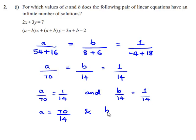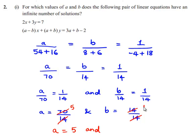So we can write: a by 70 equals 1 by 14, giving a equals 70 divided by 14 equals 5; and b by 14 equals 1 by 14, giving b equals 1. So the required values are a equals 5 and b equals 1.